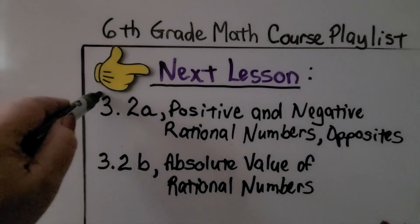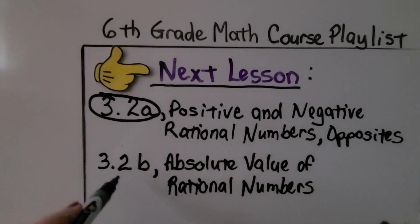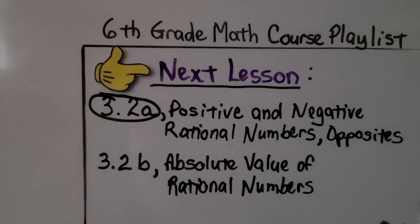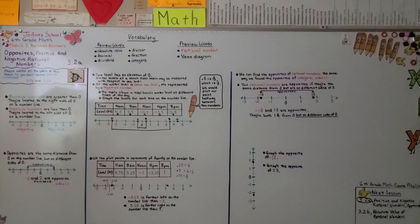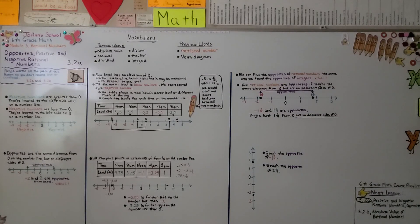Now we've completed this lesson. We're going to move on to the second part of the lesson: absolute value of rational numbers. If you have trouble identifying the location of a rational number on a number line, first try identifying the two consecutive numbers that it should be between — that might help you. I hope you have a great day, and I'll see you next time. Bye.